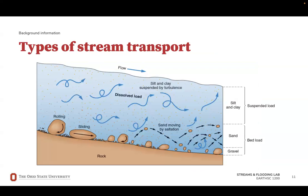Sediment transport is a key process that involves the movement of materials of various sizes and types, occurring in three primary forms: dissolved load, suspended load, and bed load. The dissolved load consists of mineral ions that have been chemically weathered from rock and soil and are carried in the water itself, invisible to the naked eye; these ions are essential for the chemical composition of the stream and its ecological health. The suspended load is made up of fine particles such as silt and clay that are light enough to be held aloft by the turbulence of the water column; these particles can be carried for long distances and are the main contributors to the stream's turbidity. Finally, the bed load is composed of larger, heavier particles like sand, gravel, and pebbles that are pushed, rolled, or bounced along the bottom of the stream bed — a movement most pronounced during high flow conditions when the water has the energy to mobilize these larger particles.